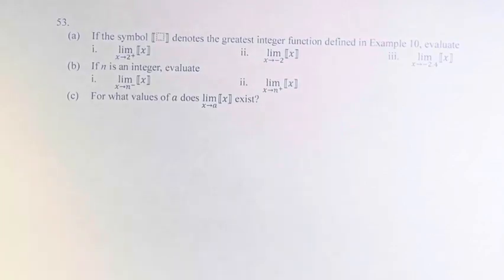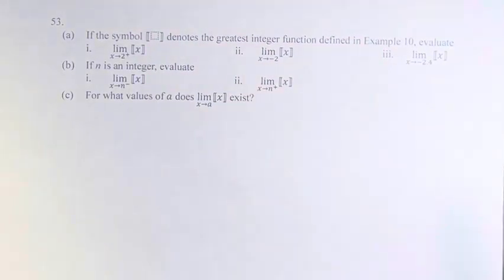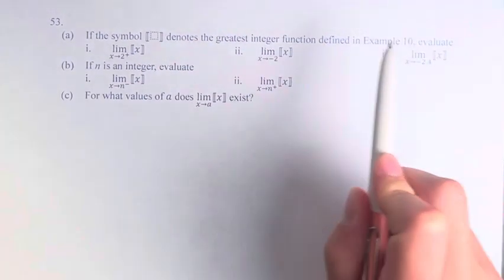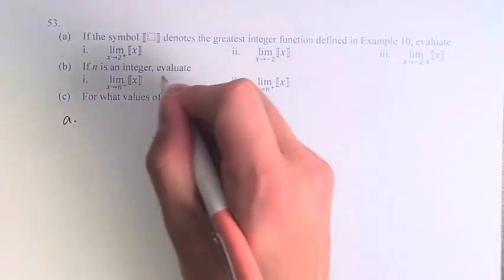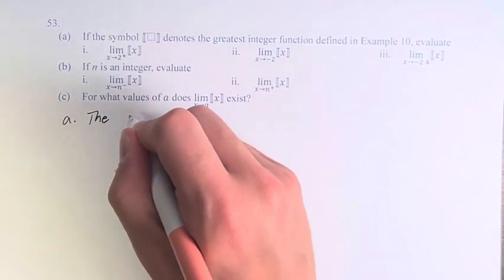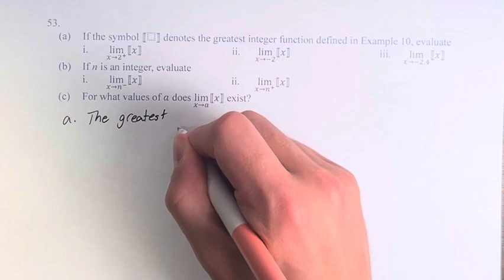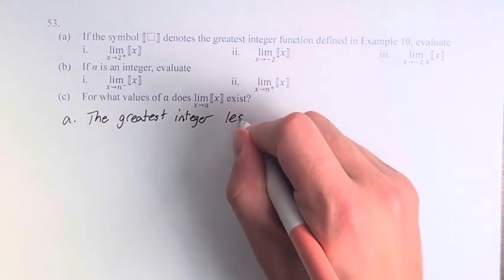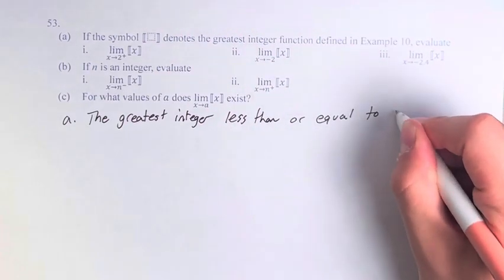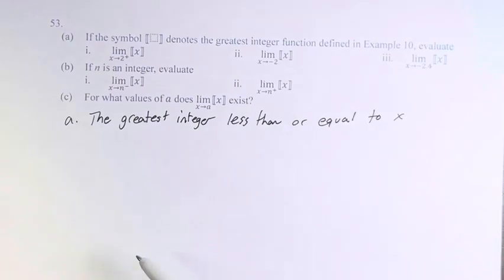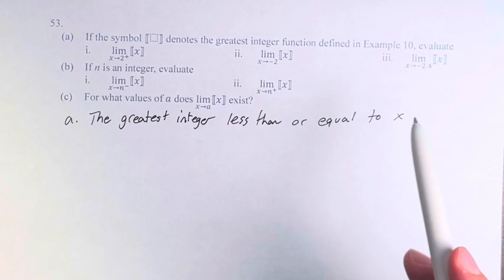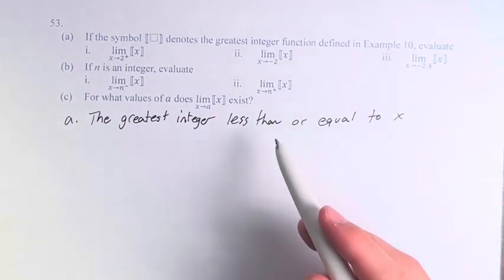Hello and welcome back to another video. In this problem we're asked: if the symbol with these brackets denotes the greatest integer function defined in example 10, evaluate the following limits. So what is this function actually? If we're taking this function of f of x, it would be the greatest integer less than or equal to x.